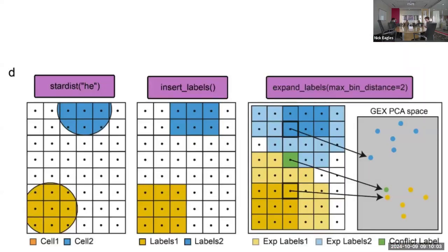The insert labels function works as follows: after the Stardist segmentation step, you get polygons from each cell — shown as circles here — that overlap bins in an imprecise way. The insert labels function associates the segmentations with the closest bins, making it more square-like, as long as it overlaps the bins exactly. There's also the expand labels step, which by default is two bins. They showed an example with two cells — one yellow, one blue — and a green bin equidistant from both nuclei.